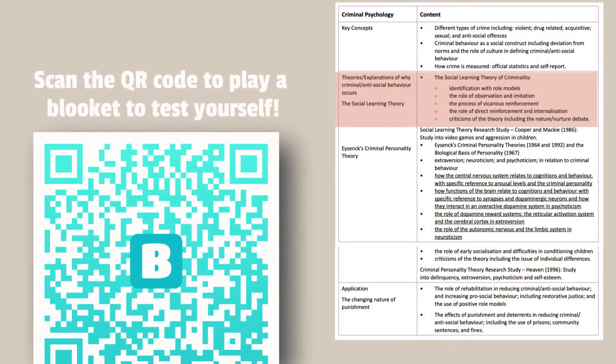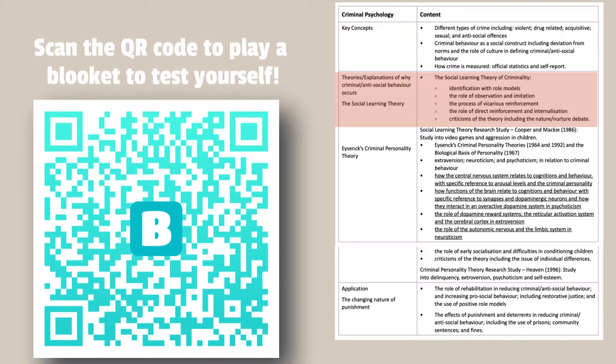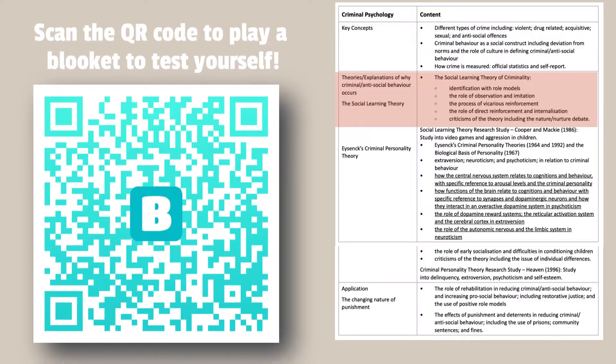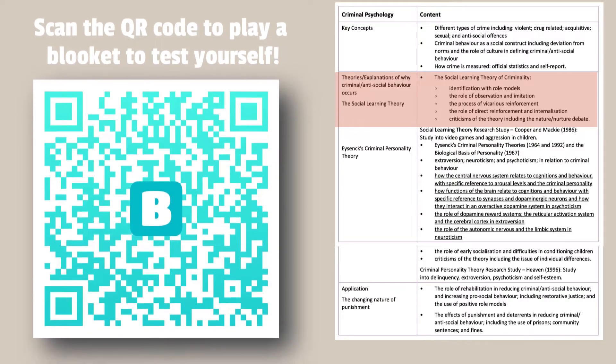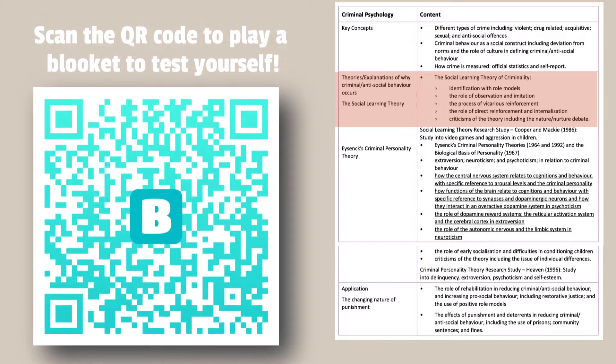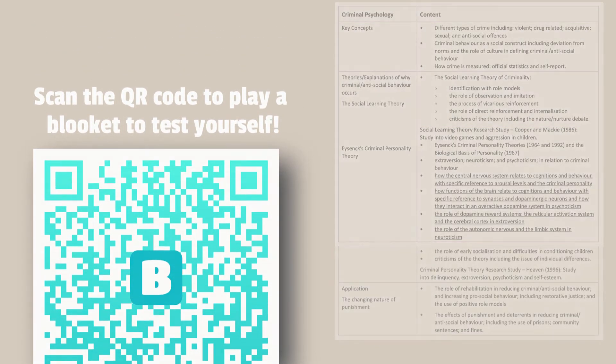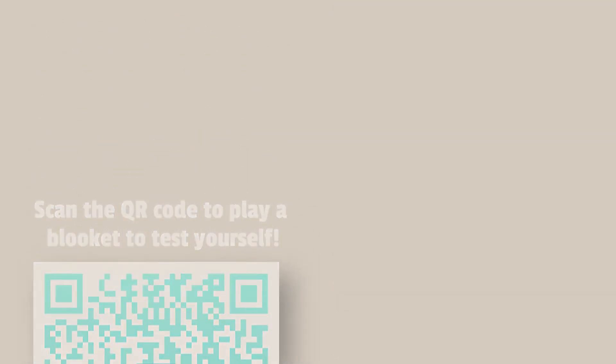If you want to test yourself in a more fun way, there's a QR code on the screen for a Blooket. Please scan it, give it a go and test yourself — play some solo games and try to get a high score. Otherwise, all that's left is to check out the other videos, like, subscribe and get yourself revising.